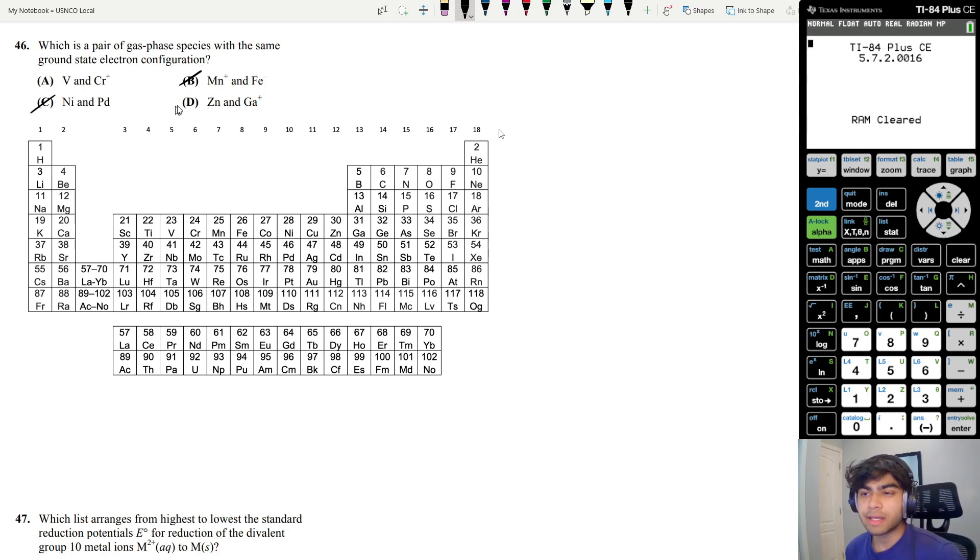The thing with A is that we have chromium plus. You would expect chromium plus to have an electronic structure starting at argon with 3d4 and 4s2. According to Hund's rule, electrons are going to occupy these shells in this order. And according to this order, this is what the electronic structure of chromium plus should be. But it's not.